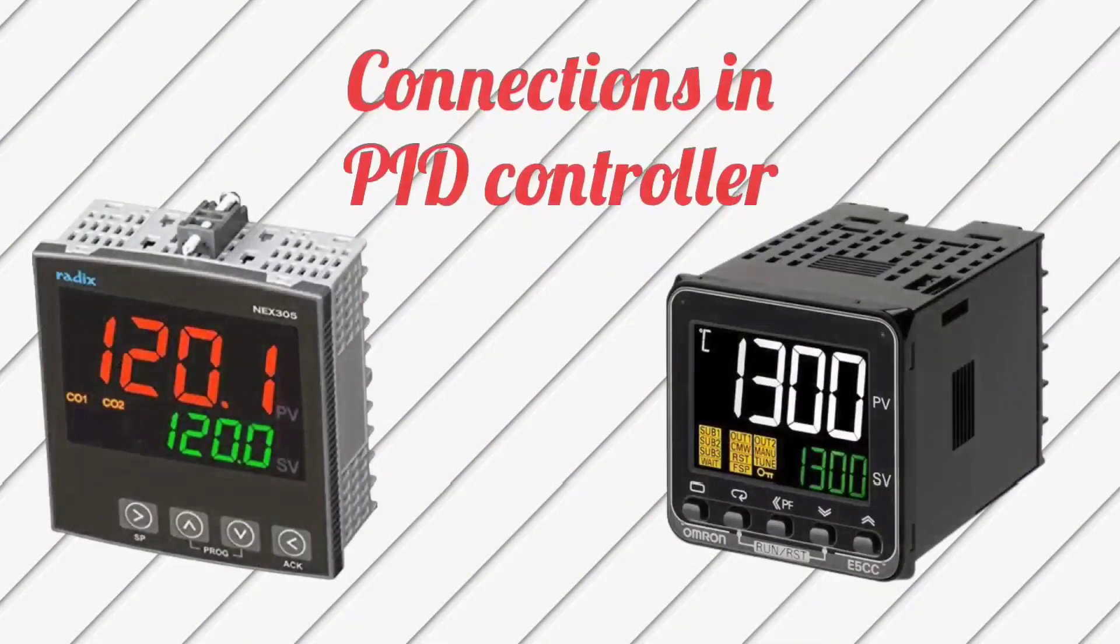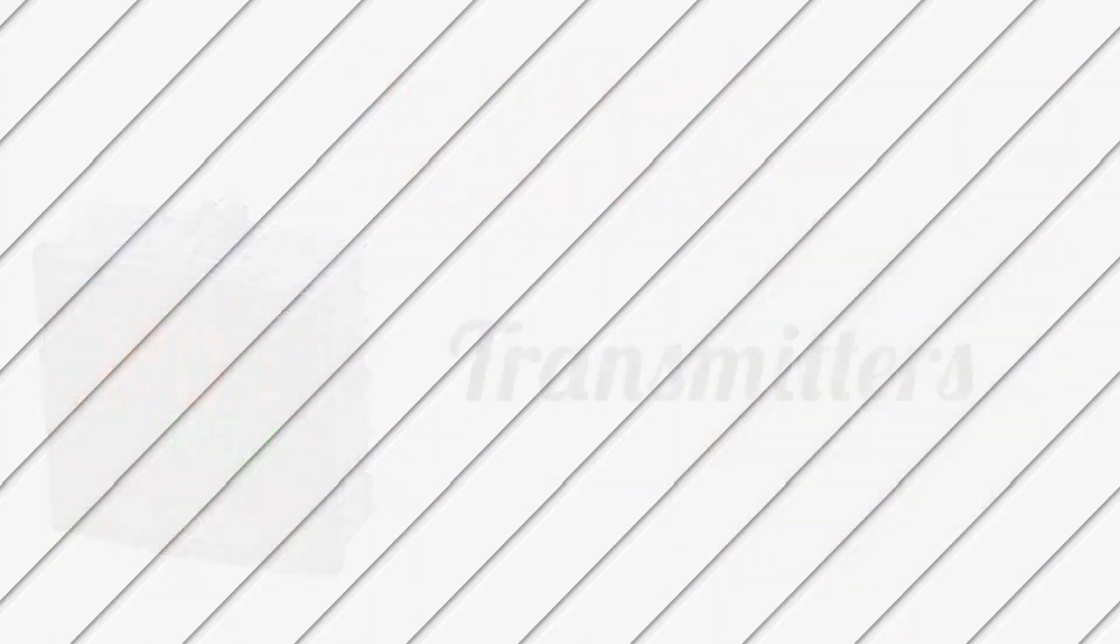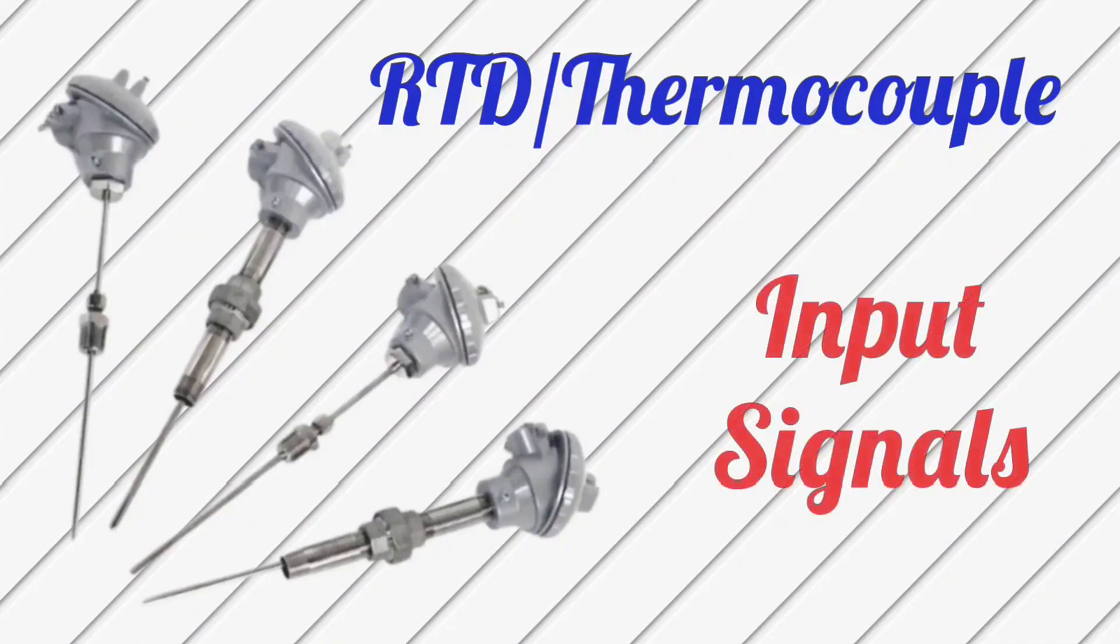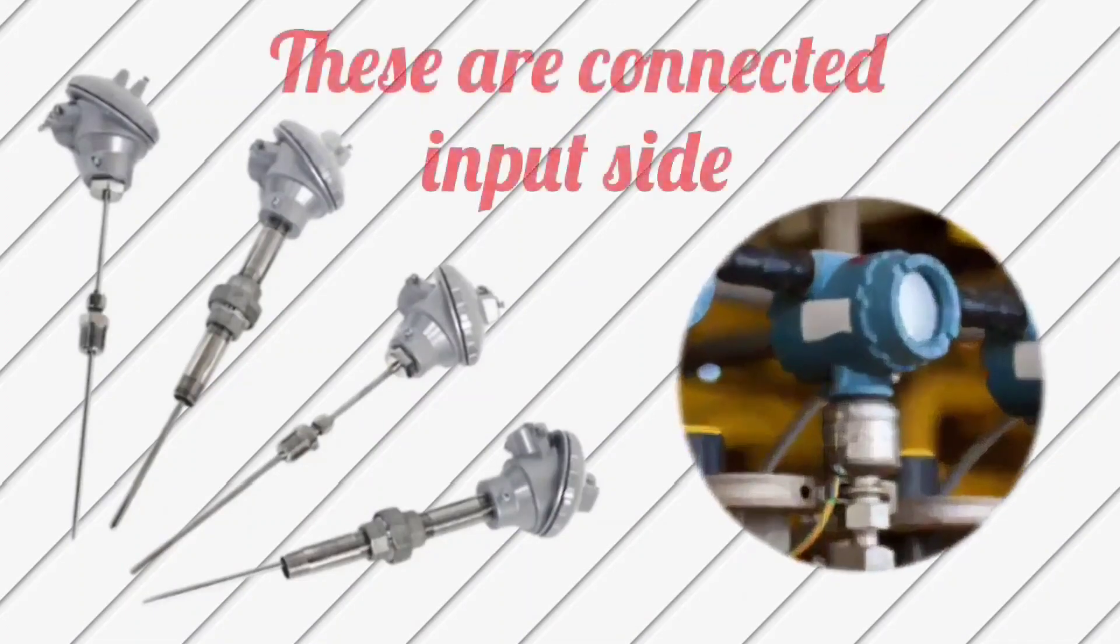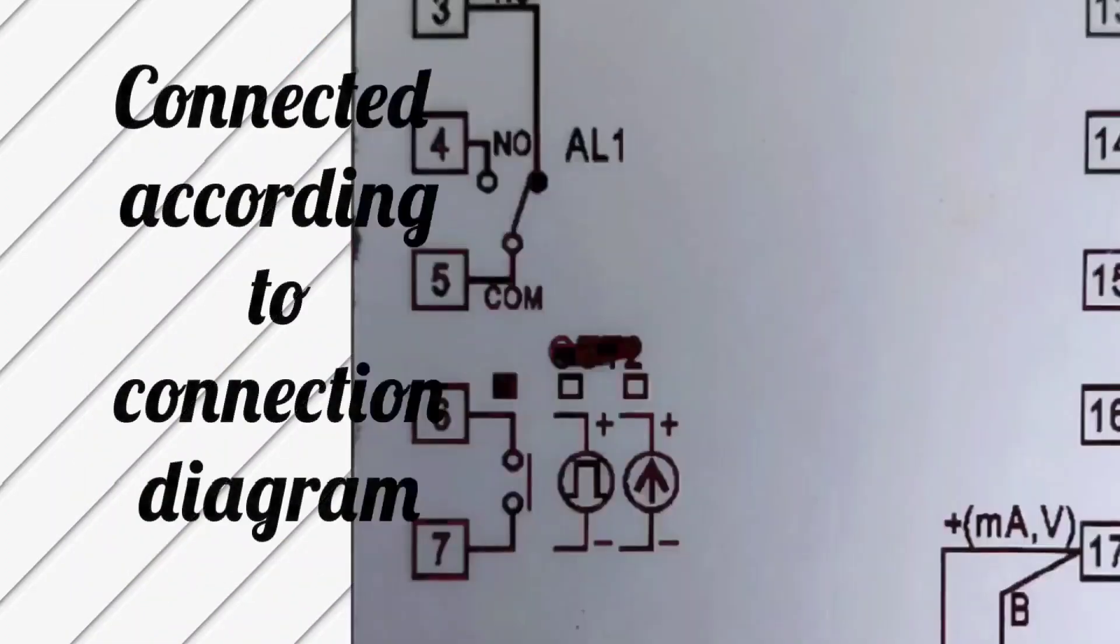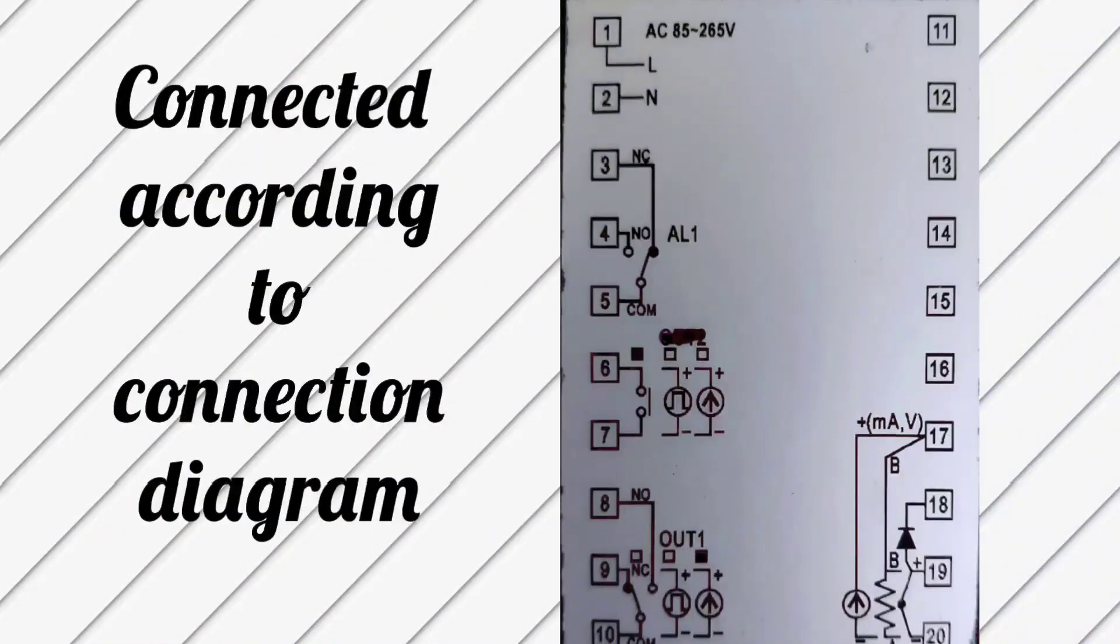First, let's understand to make connections in the PID controller. The signals of transmitters, RTD, thermocouple are input signals. So they will be connected to the input side. These are connected according to the connection diagram only.